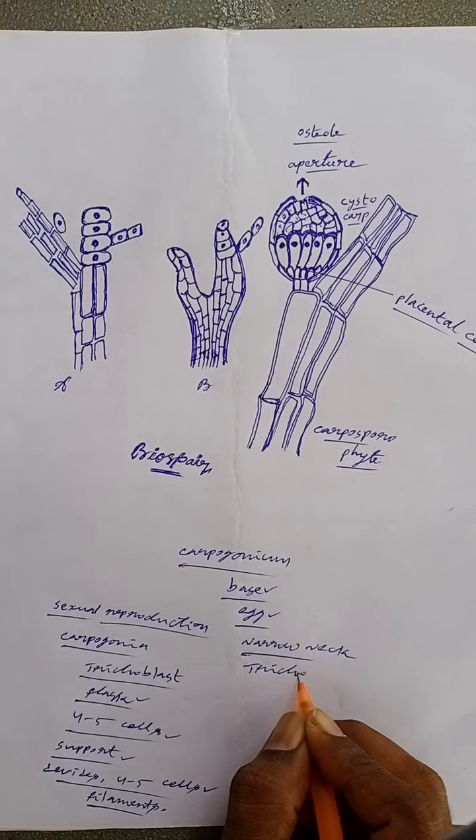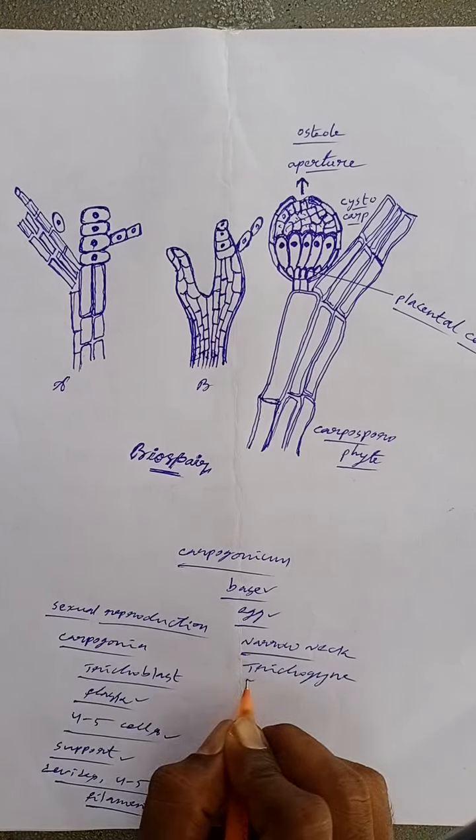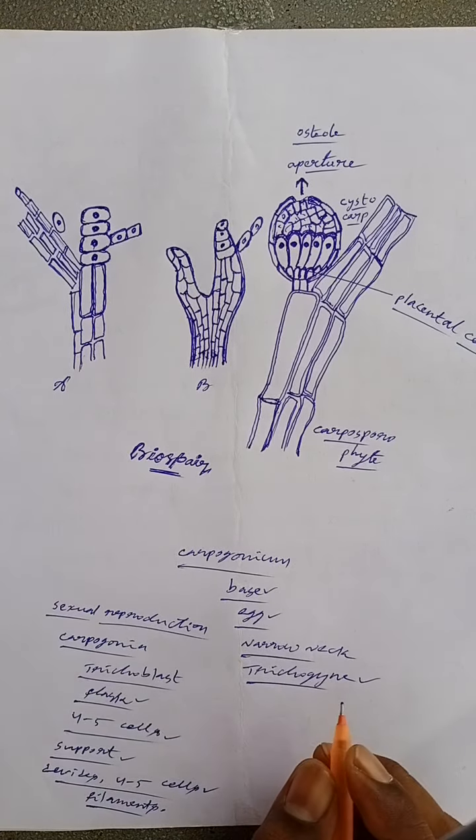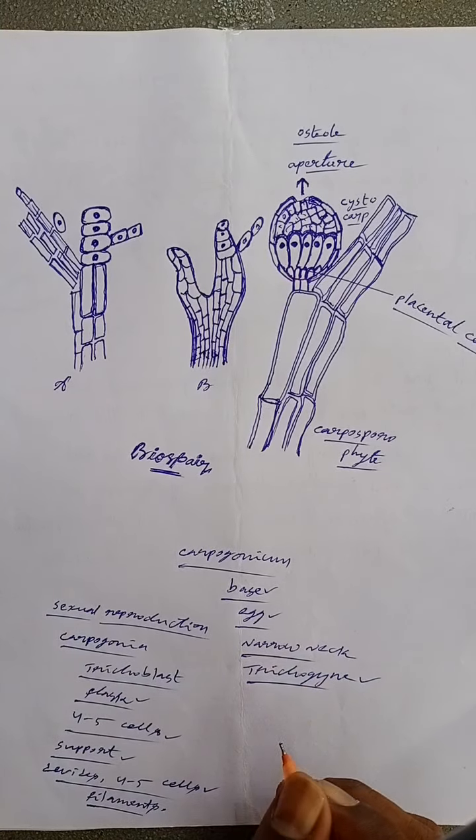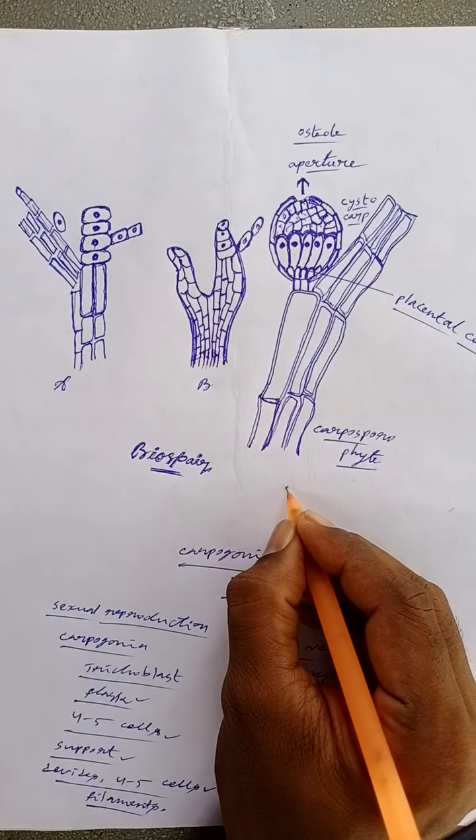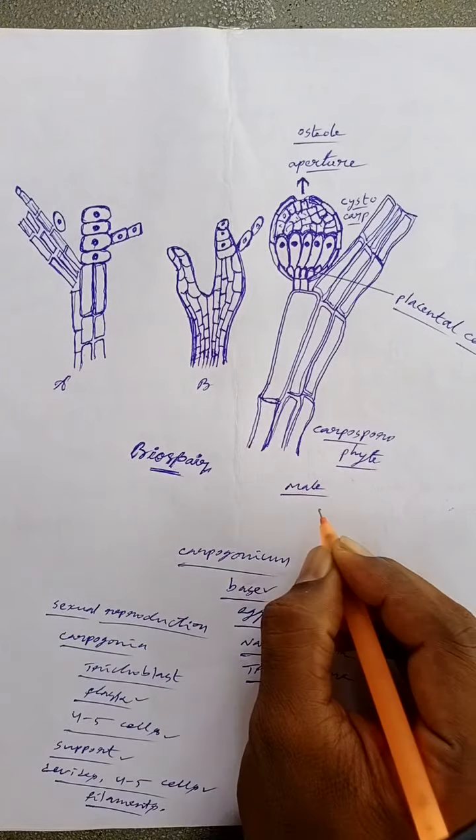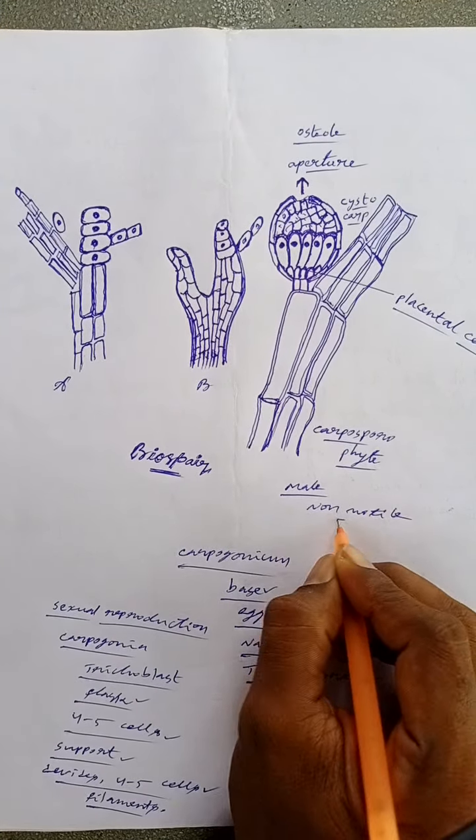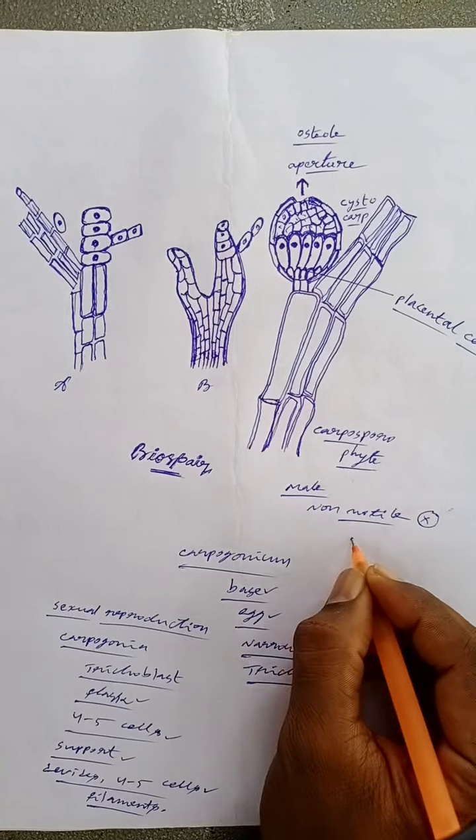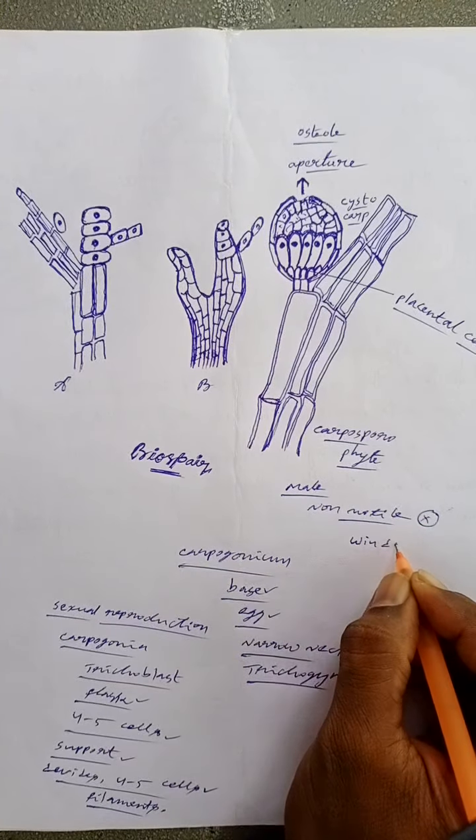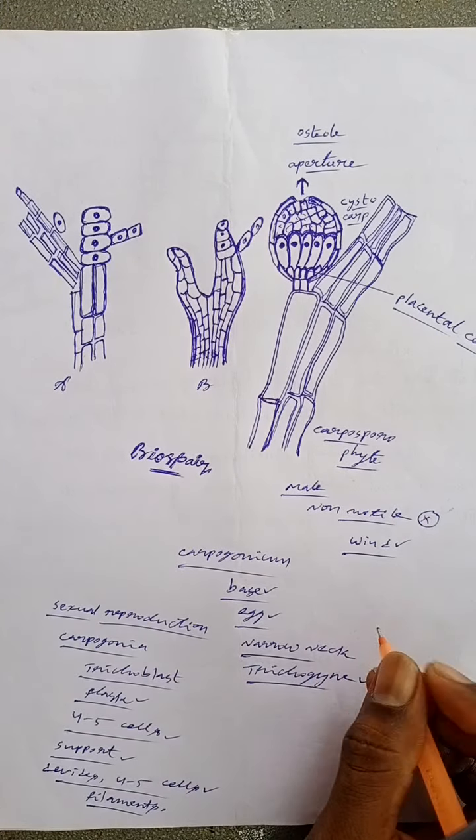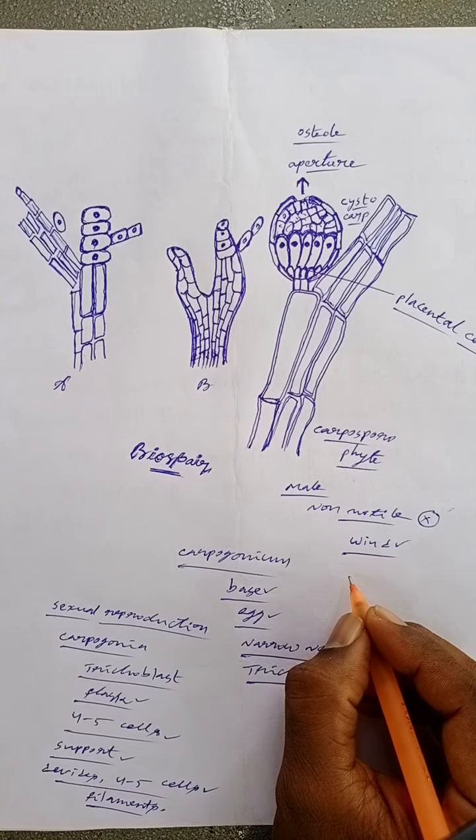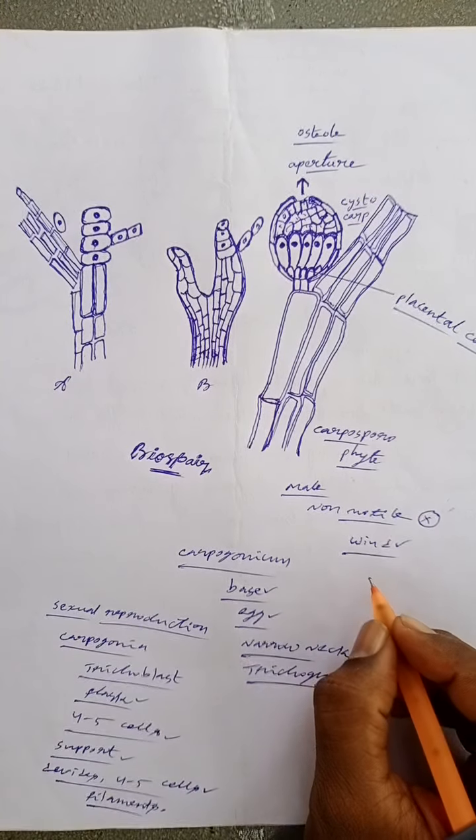Male gametes of polysiphonia are non-motile, carried by wind currents to the long receptive trichogyne. The nucleus of spermatium passes down the trichogyne and fuses with the egg to form zygote.